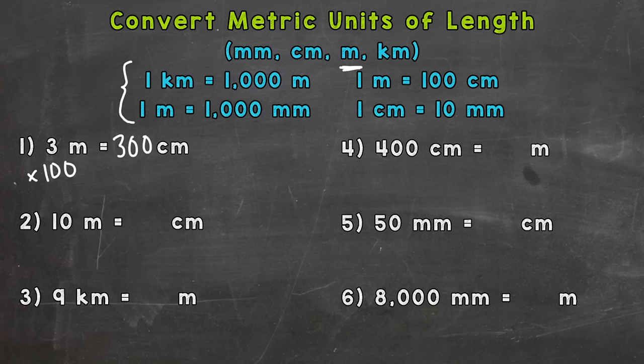Next, number two: ten meters equals how many centimeters? Again, meters to centimeters — multiply by a hundred. Each one of those meters is a hundred centimeters and we have ten of them. So ten times a hundred equals a thousand centimeters.